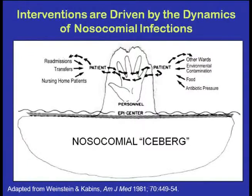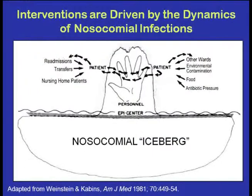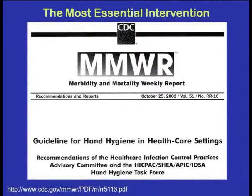Interventions to prevent infections in hospitals and ICUs are driven by the dynamics of nosocomial infections. Infections are like an iceberg — for every patient infected with a bug, there are probably five to ten patients colonized with the same bug. Central to spread is the hands of healthcare workers. That's the most important part of infection control. Since Semmelweis, hand hygiene is the key problem. Other sources include environmental contamination, antibiotic pressures, and transfers between units.